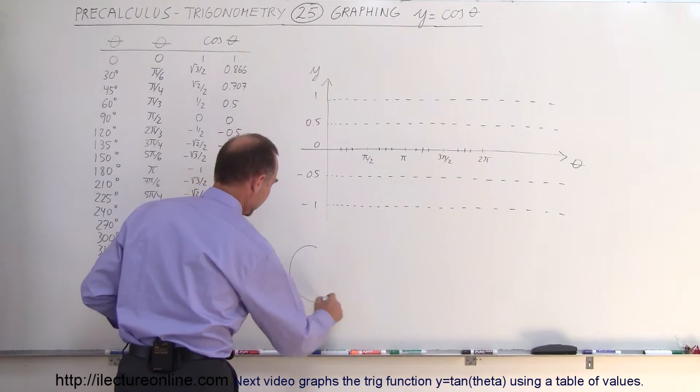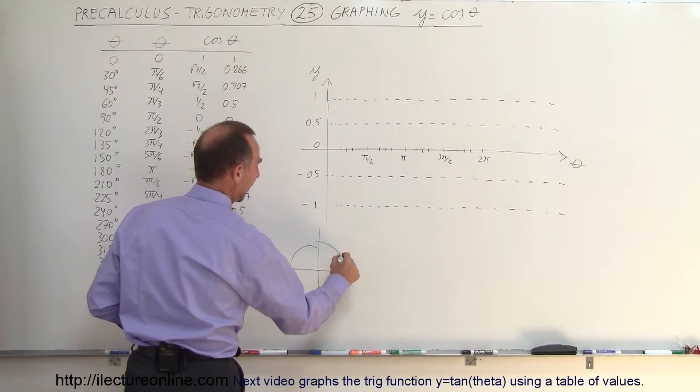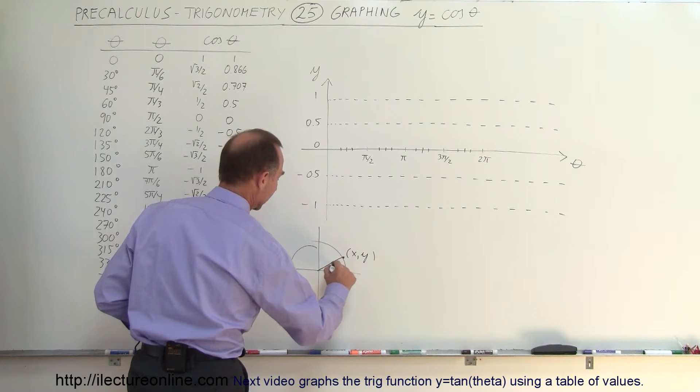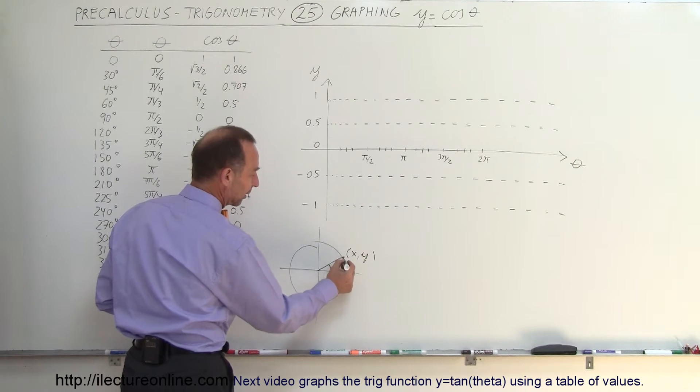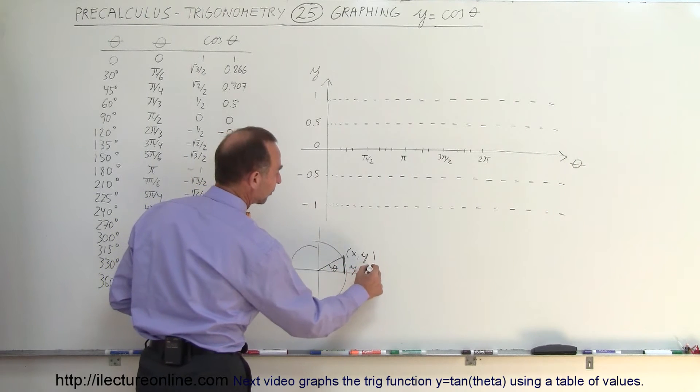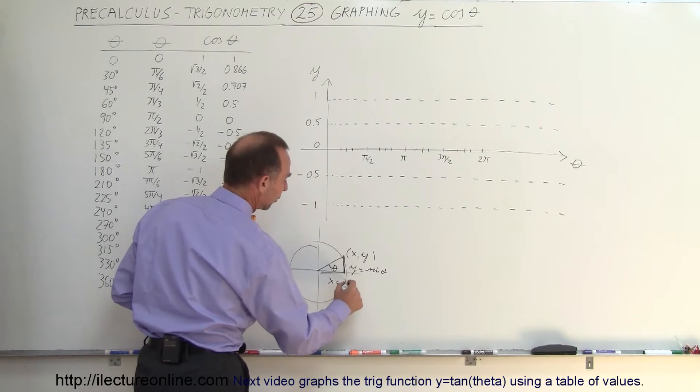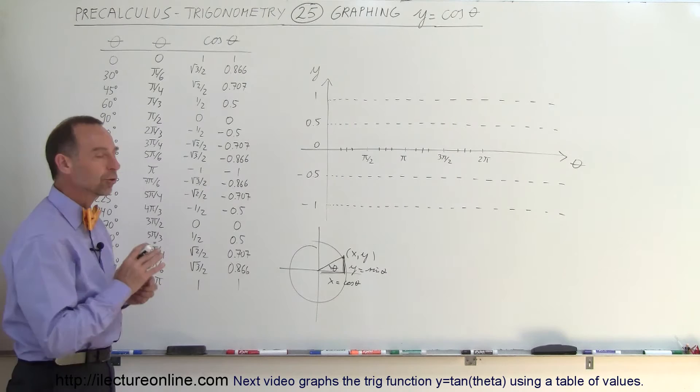let me draw a little unit circle right here. In the unit circle, if we take a point (x,y) caused by some angle theta, let's call this the angle theta right there. Notice that the vertical distance, the y value, is equal to the sine of theta, and the x value is equal to the cosine of theta. Here we're going to graph y equals cosine of theta.